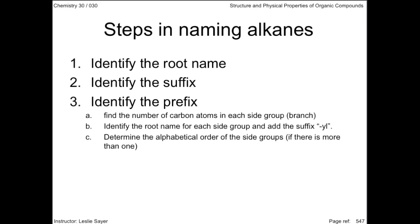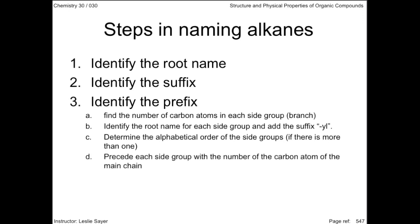Determine the alphabetical order of the side groups if there's more than one. For example, methyl comes before propyl, but after ethyl. Precede each side group with the number of the carbon atom on the main chain — for example, 3-ethyl, 2-methyl.